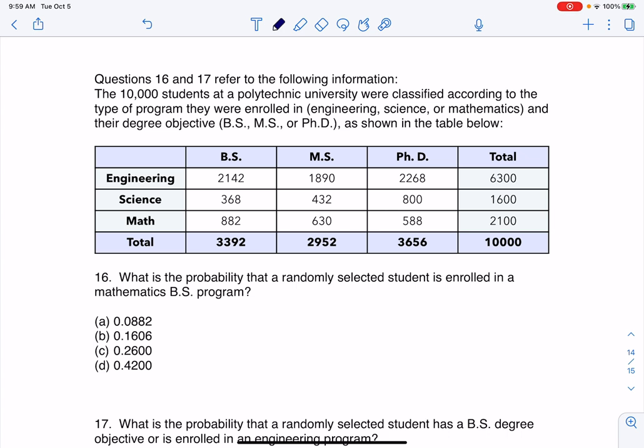We have this categorical variable: engineering, science, or math, and their degree: BS, MS, or PhD, shown in the table below.